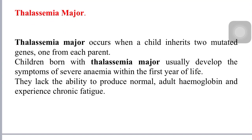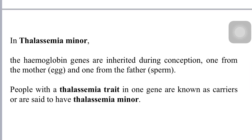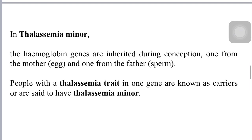Thalassemia major occurs when a child inherits two mutated genes, one from each parent. Children born with thalassemia major usually develop symptoms of severe anemia within the first year of life — they lack the ability to produce normal adult hemoglobin and experience chronic fatigue. In thalassemia minor, the hemoglobin genes are inherited at conception — one from the mother and one from the father. People with one thalassemia trait gene are known as carriers, or are said to have thalassemia minor.